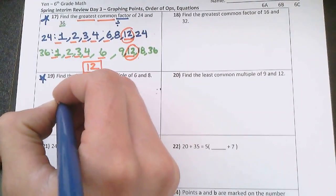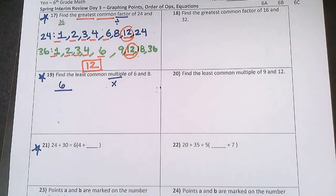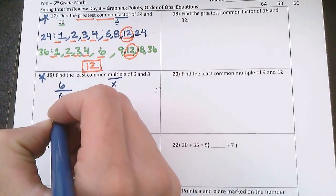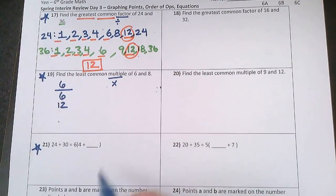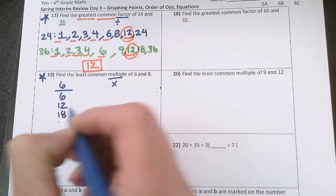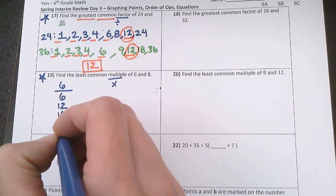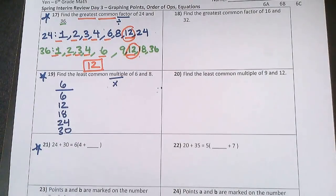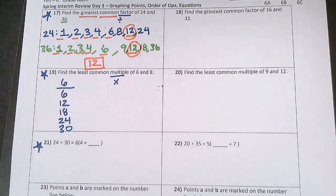So 6, the first multiple of 6 is 6 because 6 times 1 is 6. And then 6 times 2 is 12. 6 times 3 is 18. 6 times 4 is 24. 6 times 5 is 30. I'm going to stop there. You might have to go out further, but let's stop there for now.